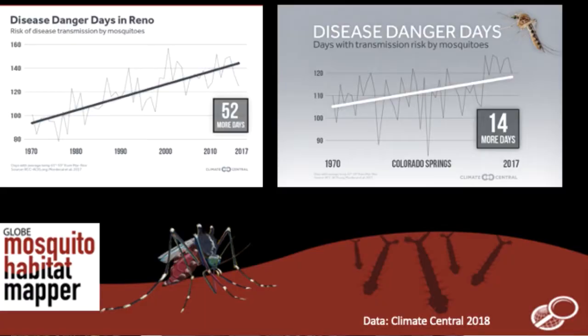The science is validating these personal experiences that people have been noticing with respect to mosquitoes. In about 94% of the major US cities, the number of days where residents have risk of a mosquito-borne disease being transmitted has increased. Some places, like Reno, Nevada, the mosquito season now is a full month and a half longer than when I was a kid in the 1970s. Where I live here in Colorado, it's about two weeks longer.